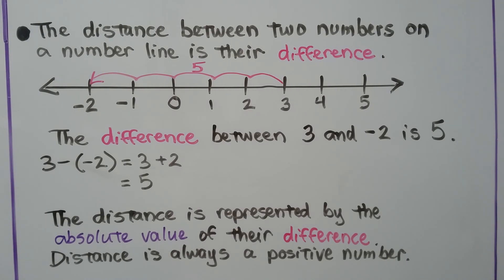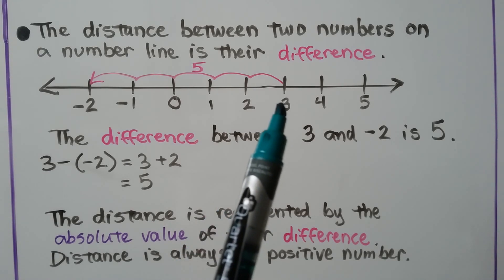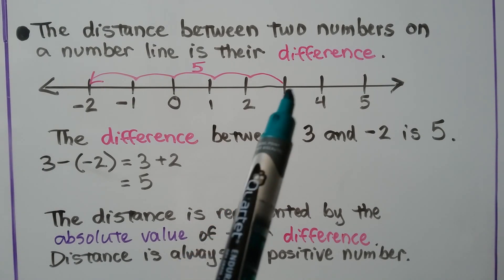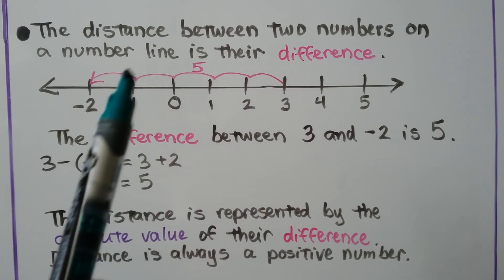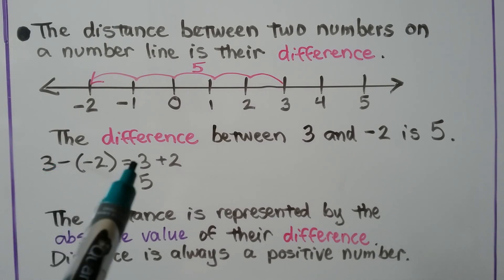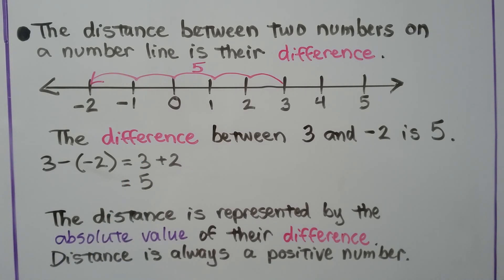The distance between two numbers on a number line is their difference. The difference between positive 3 and negative 2 is 5 — there are 5 hops to get to negative 2. We have 3 minus a negative 2; it becomes 3 plus 2, that's 5. The distance is represented by the absolute value of their difference, and distance is always a positive number.